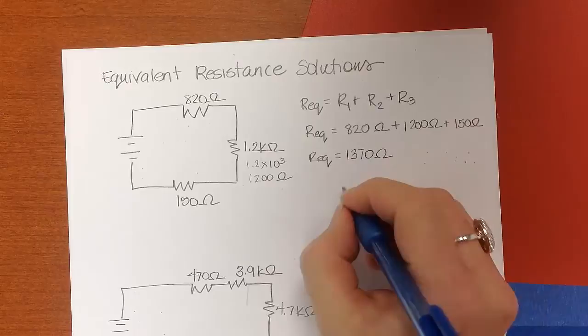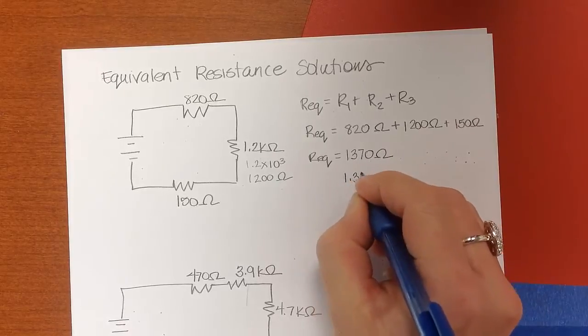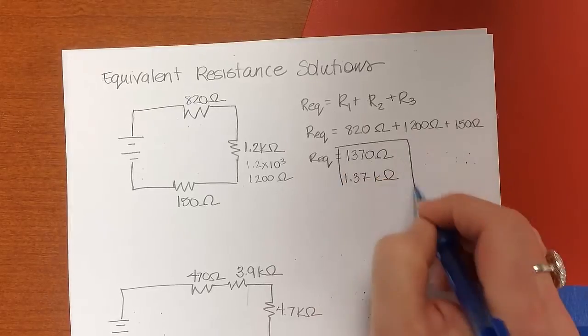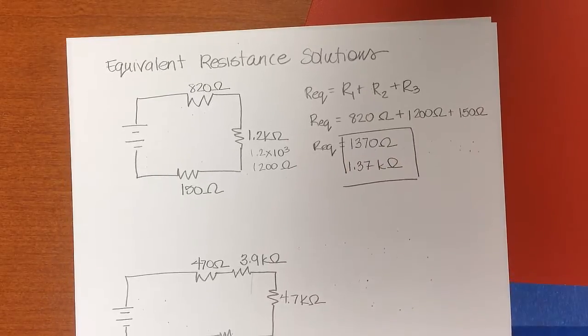Or if I wanted to write that as kilo ohms, I would move the decimal three places, one, two, three. And it would be 1.37 kilo ohms.